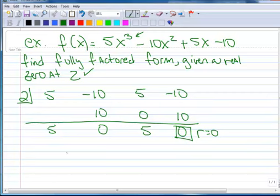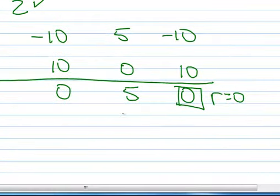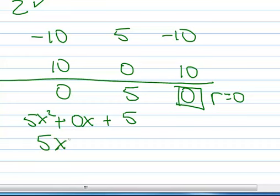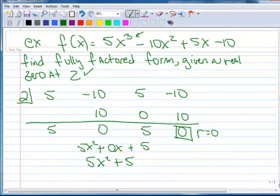So the resulting polynomial is 5x squared plus 5. Now I need to set this equal to 0 and solve. 5x squared plus 5 equals 0.